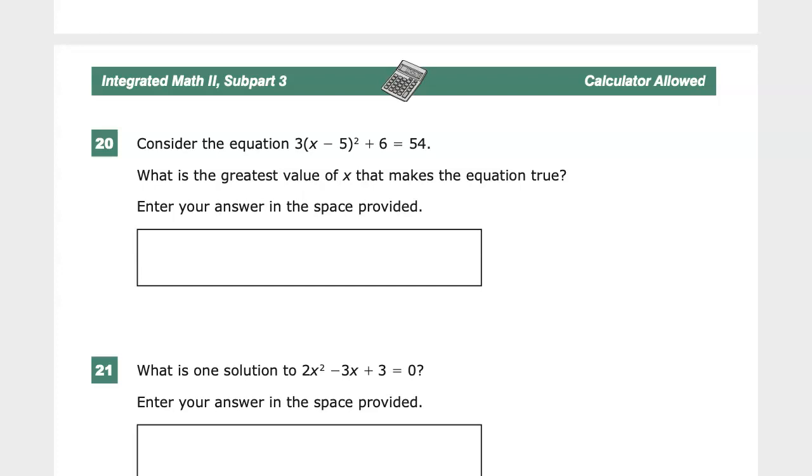Consider the equation 3 times the quantity x minus 5 squared plus 6 equals 54. What is the greatest value of x that makes this equation true? Now they say greatest value of x because of the nature of the fact that it's quadratic, so you'll probably have two answers, right?